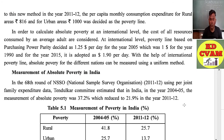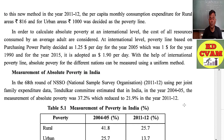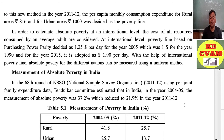To calculate absolute poverty at an international level, the cost of all resources consumed by an average adult are considered. At the international level, the poverty line is based on Purchasing Power Parity (PPP). It was decided as $1.25 per day for the year 2005, which was $1 for the year 1990, and for the year 2015 it was adopted as $1.90 per day. With the help of the international poverty line, absolute poverty for different nations can be measured using a uniform method.